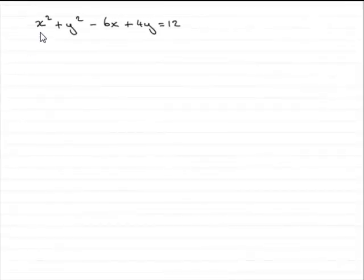Now, in the first part of this question, we've got the circle x squared plus y squared minus 6x plus 4y equals 12, and we're asked to find the center and the radius.